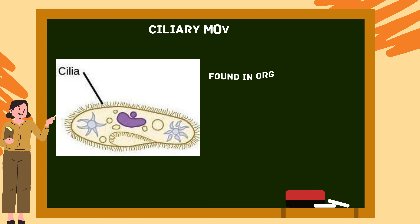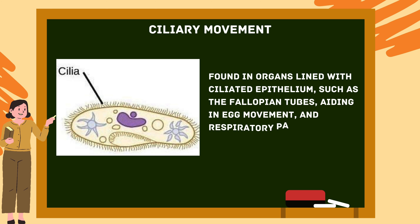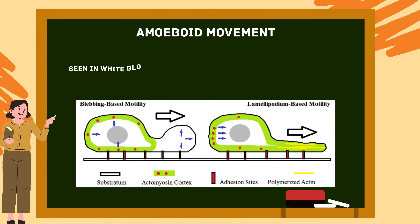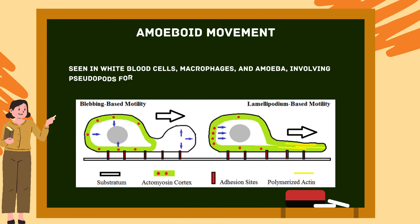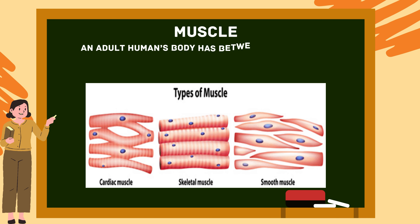Ciliary movement is found in organs lined with ciliated epithelium, such as the fallopian tubes aiding in egg movement, and respiratory passages for clearing dust. Amoeboid movement is seen in white blood cells, macrophages, and amoeba, involving pseudopods for movement. Muscular movement is the most common form in animals, involving the contraction and relaxation of muscles.